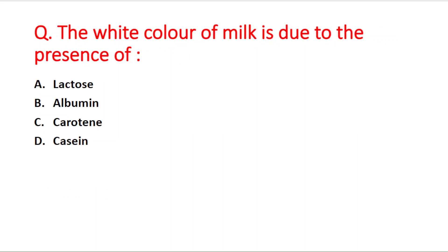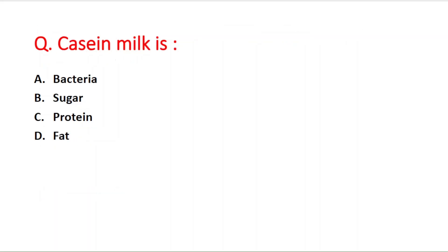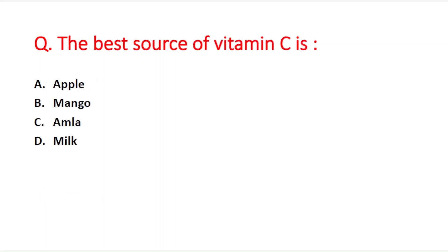Option A is lactose, B is albumin, C is carotin, and D is casein. The right answer is option D — casein. Next question: casein in milk is a — option A bacteria, B sugar, C protein, D fat. The right answer is option C — protein.